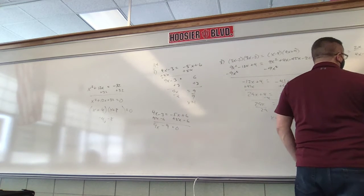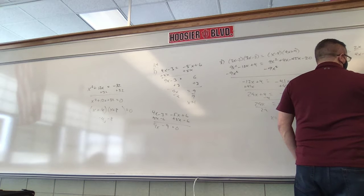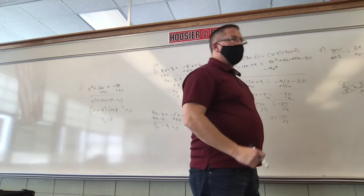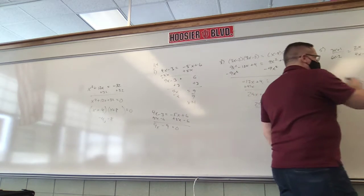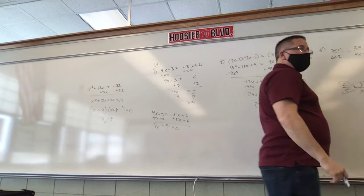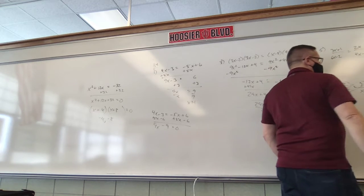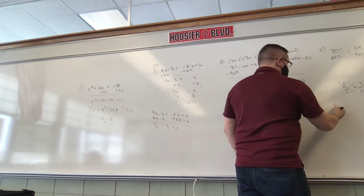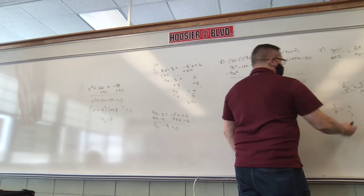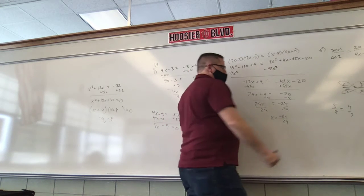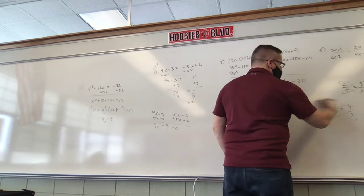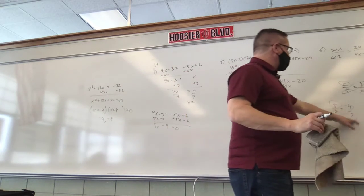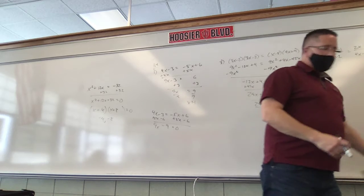Here's why it works. Take 3 sevenths equals 9 twenty-firsts — that's a true statement. 9 times 7 is 63, and 3 times 21 is also 63. So if I give you 5 over 8, is that the same as 4 over 7? Well, 5 times 7 is 35, and 8 times 4 is 32 — they're not equivalent fractions. If you have equivalent fractions, when you diagonally multiply, they have to equal each other.